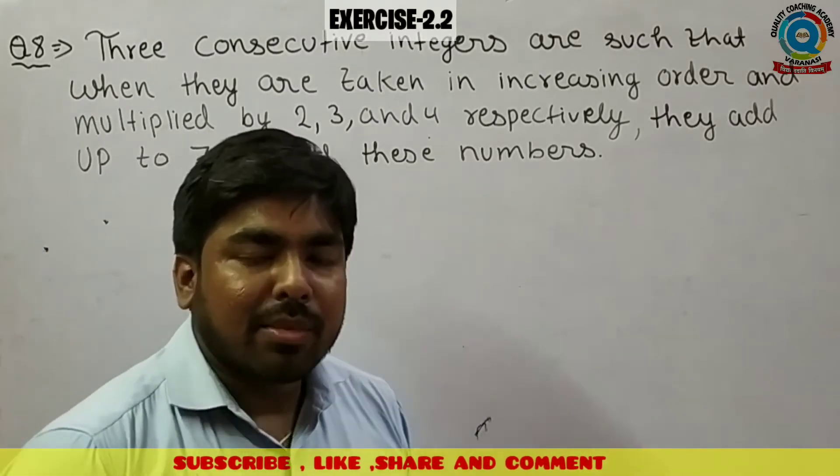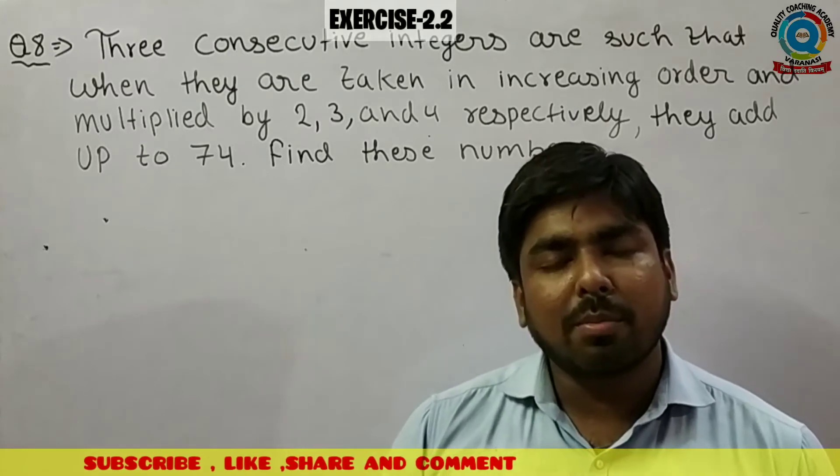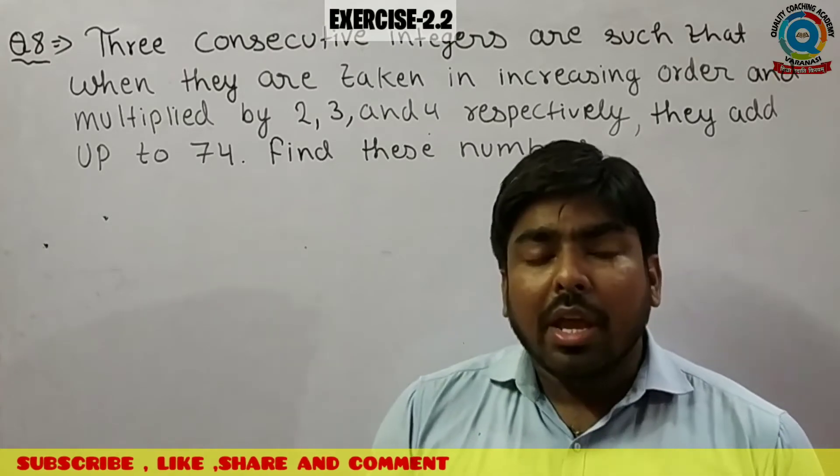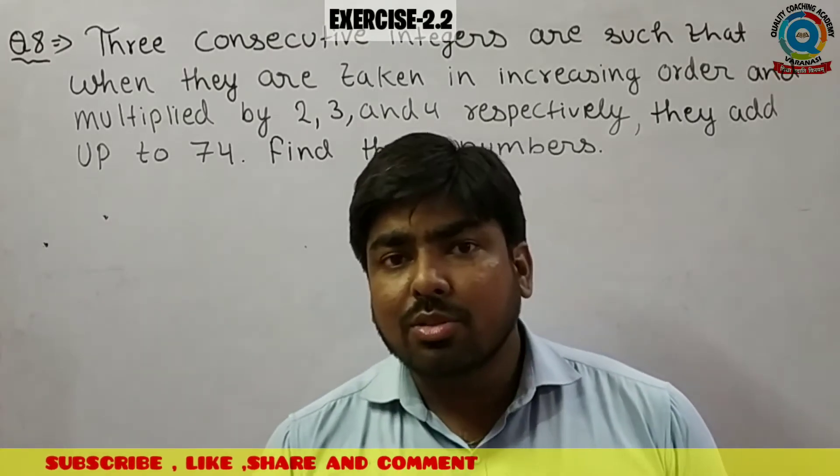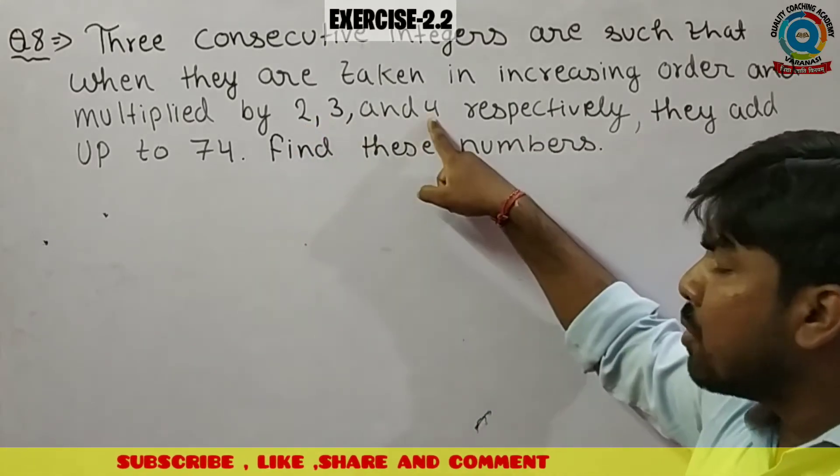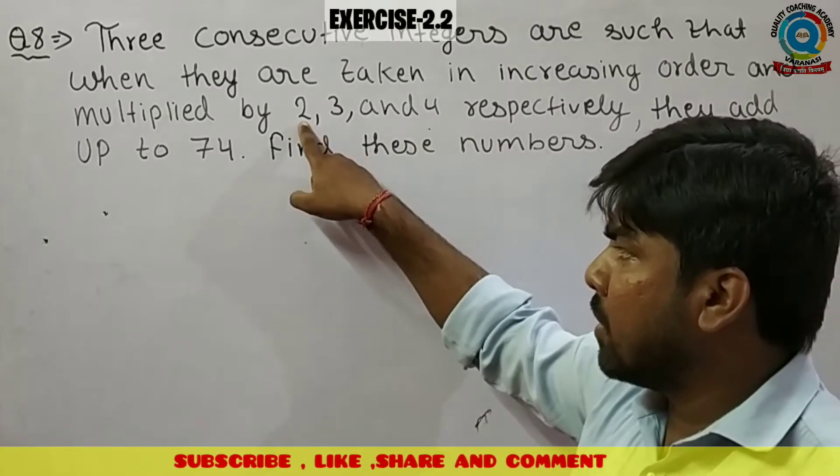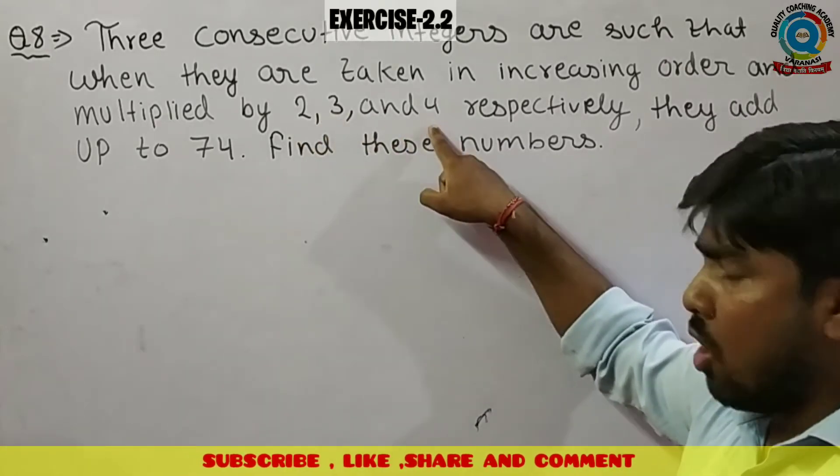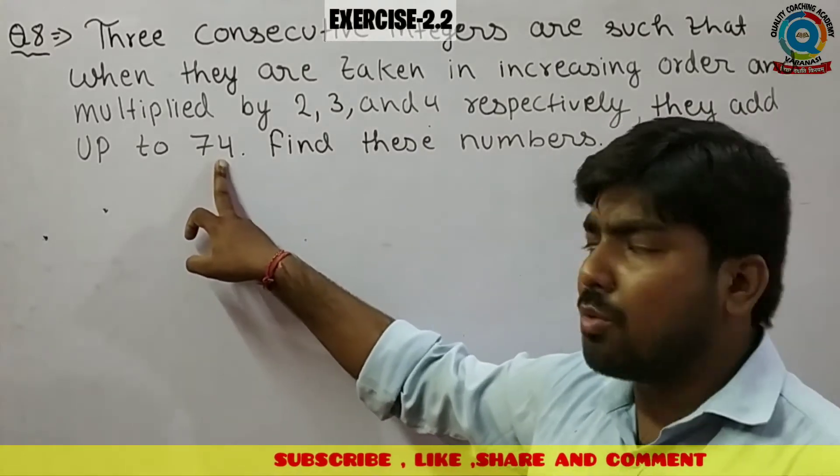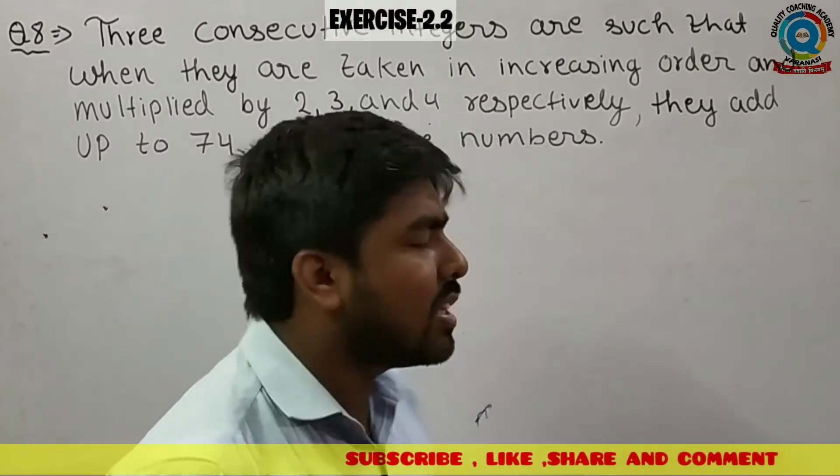Simple. Kya raha hai ki koi consecutive integer number hai, jo lagataar hote hai - 3, 4, 5, 6, 7, 8. In consecutive integer numbers ko agar mai multiply karta ho 2 se, 3 se, 4 se respectively, matlab pahle wale number me 2 se, dousare wale number me 3 se, aur tisare wale number me 4 se. Aur unko sum karta ho to aata hai 74. Tau bata ho number kya hooga.